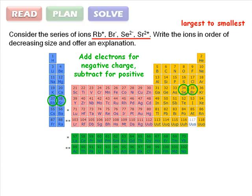Solving the problem requires an understanding of effective nuclear charge. Note that all of these ions have the same number of electrons, 36. They all have the same electronic configuration as krypton.